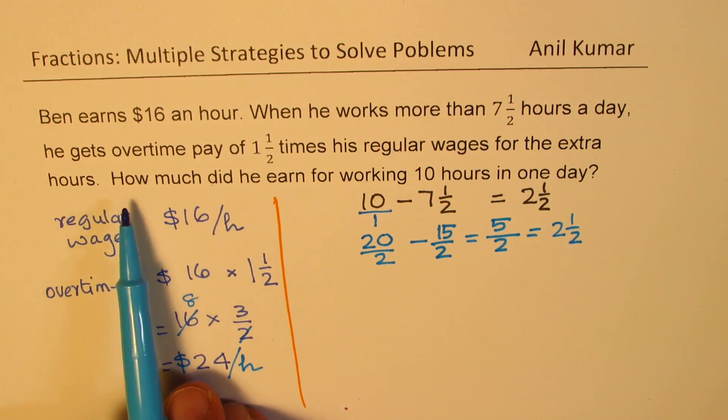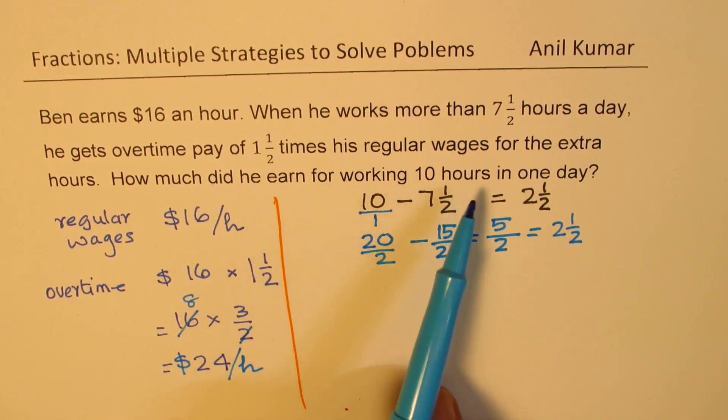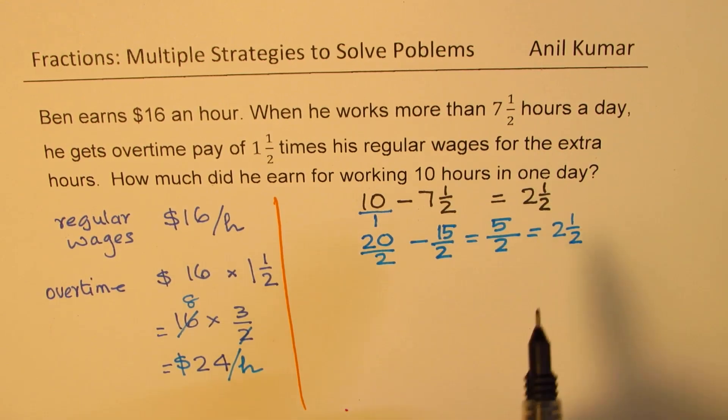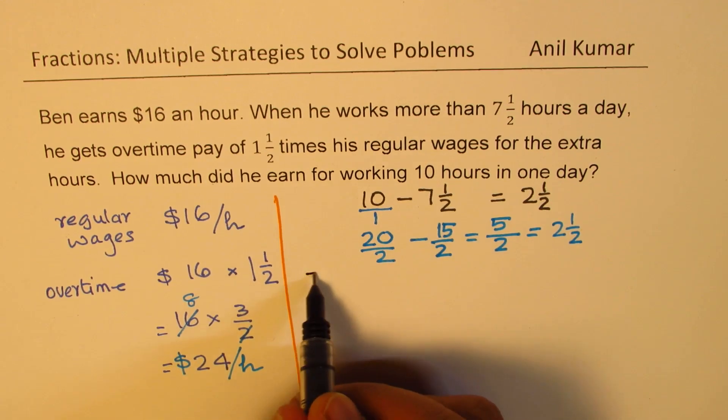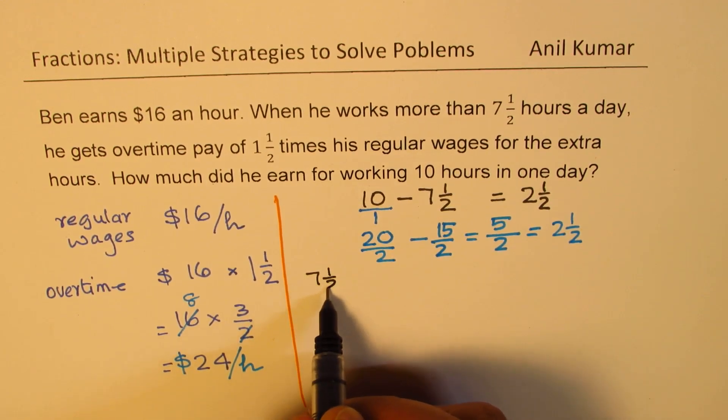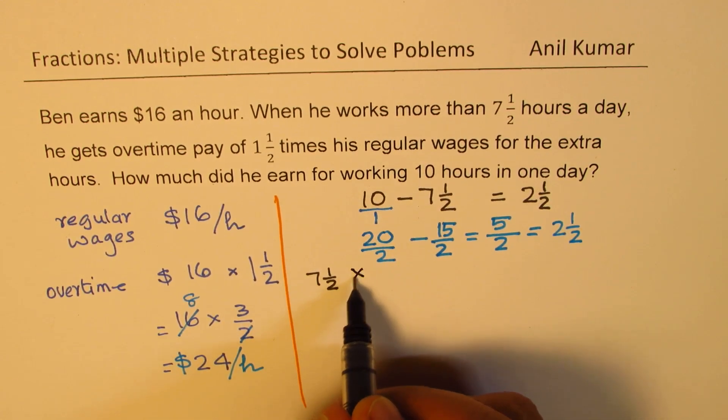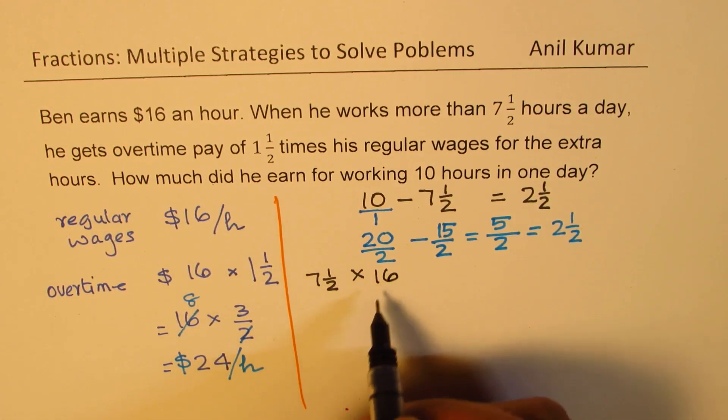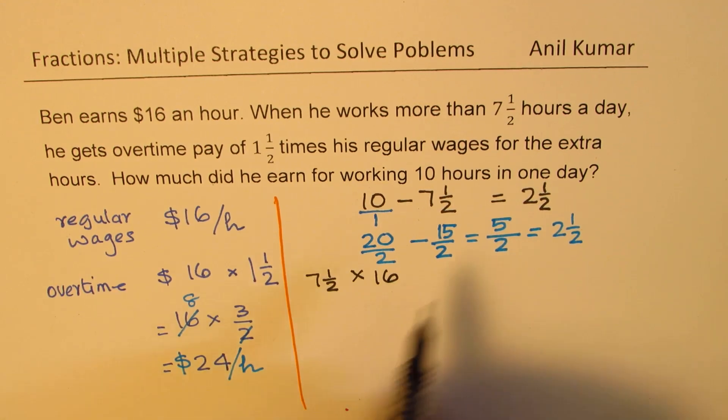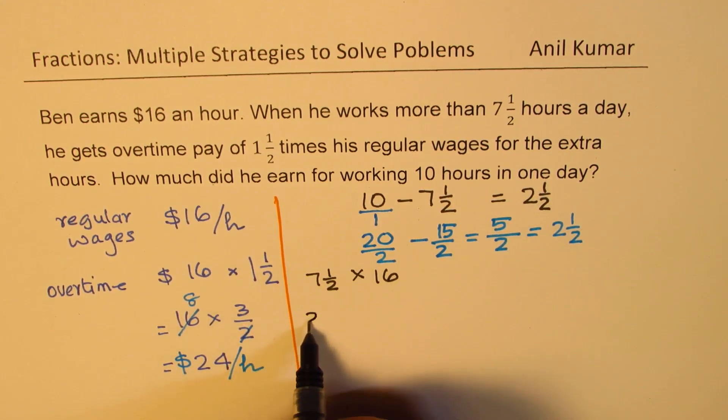Now we need to find how much did we earn for working 10 hours a day. So in this particular case, normal is 7 and a half, which is 15 over 2. So let me write again, 7 and a half. For 7 and a half hours, he gets $16 per hour.